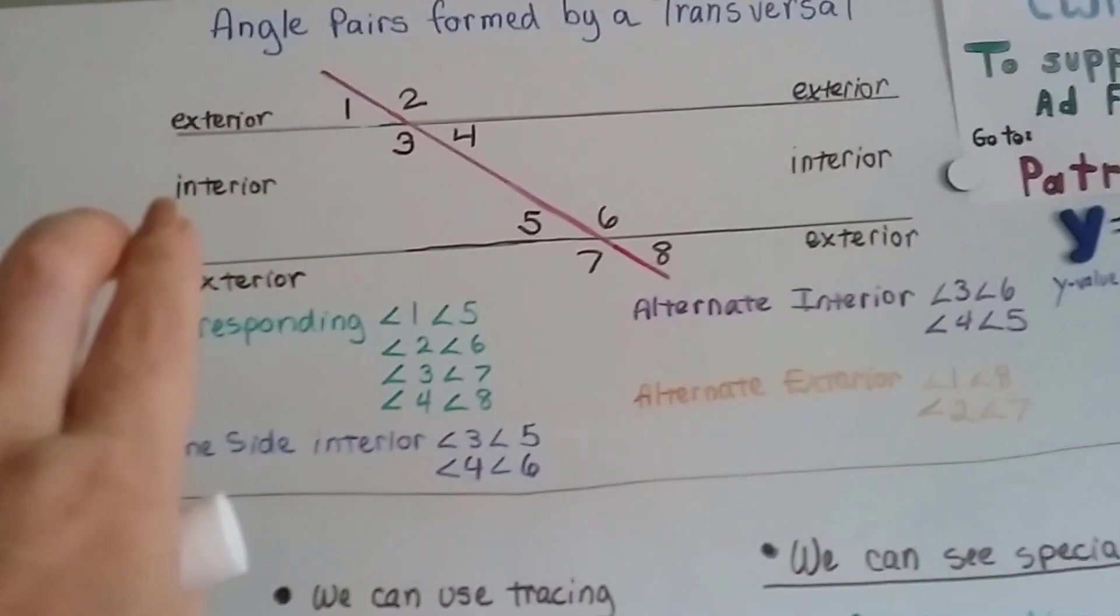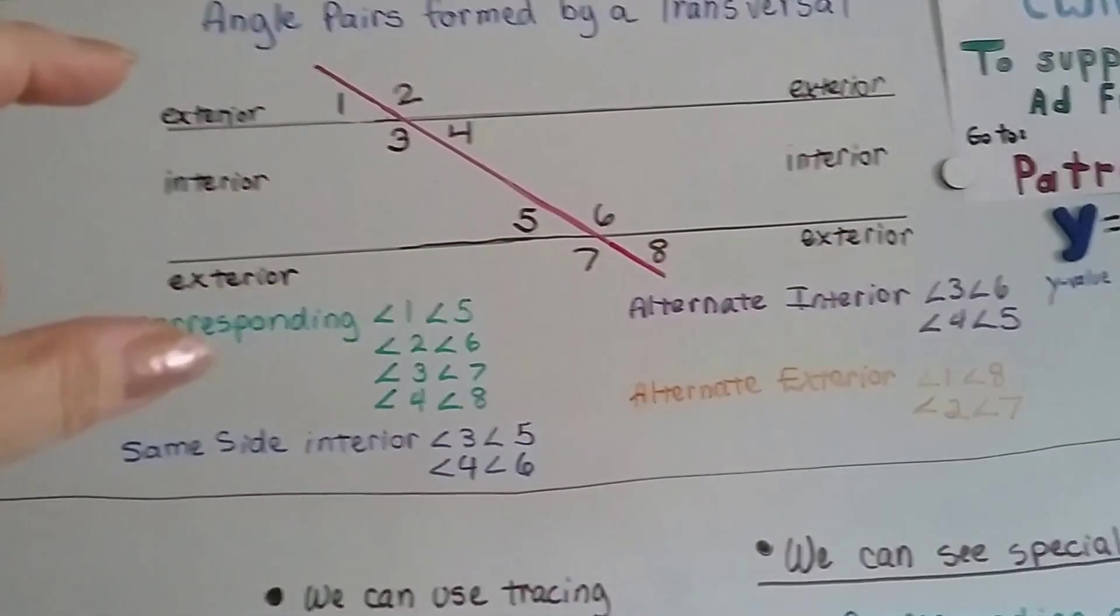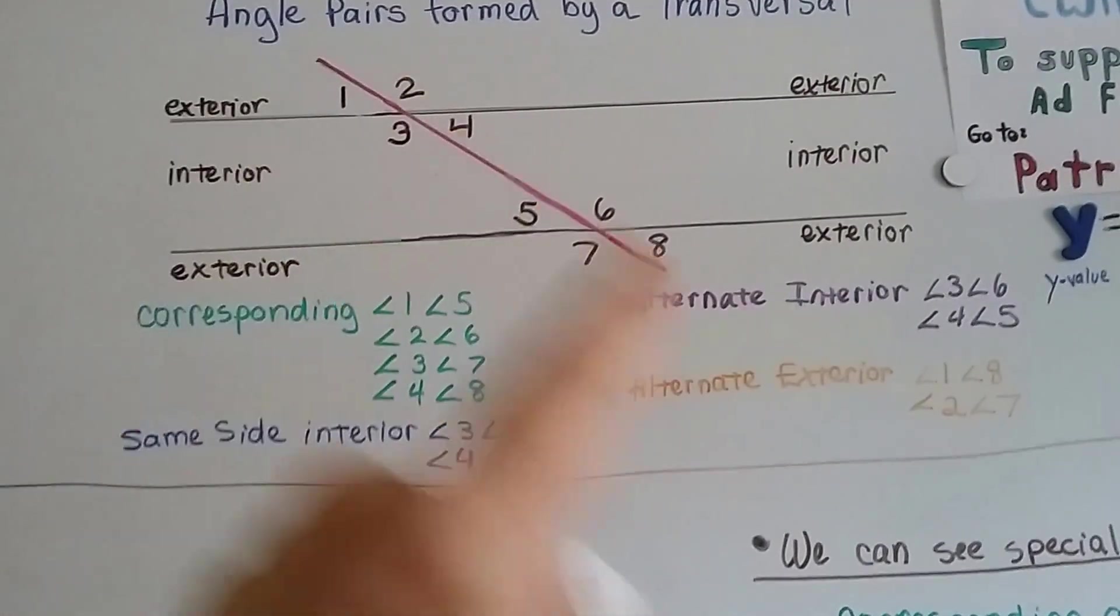Interior is inside the parallel lines, exterior is outside the parallel lines, and that is our transversal.